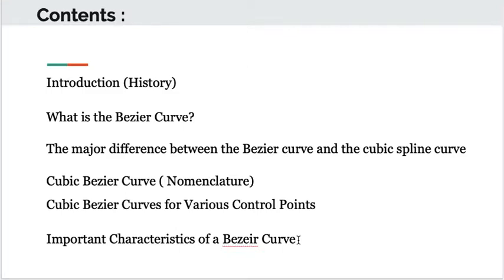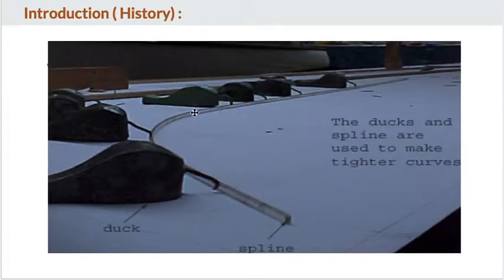Come to the point of history. You might be observing this image and thinking about what exactly it is. Before computer graphics ever existed, there were engineers designing aircraft wings and automobile chassis by using splines.